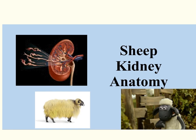The human urinary system consists of two kidneys, two ureters, one urinary bladder, and one urethra.